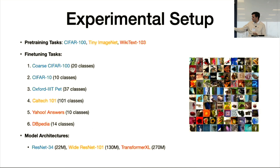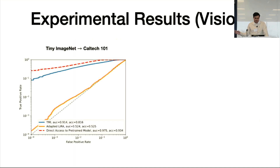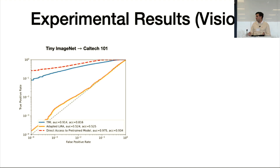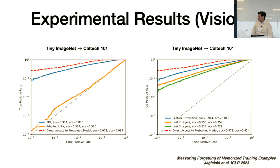For our experimental setup we have three pre-training tasks and a wide variety of fine-tuning tasks. We want to see how tasks with varying similarity to pre-training, or tasks that preserve more or less information from pre-training data, enable privacy leakage in the downstream model. In the first plot, we show an ROC curve on a log-log scale comparing the state-of-the-art membership inference attack on the pre-trained model directly versus our attack on the fine-tuned model.